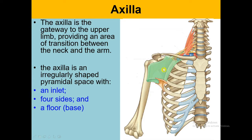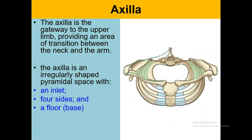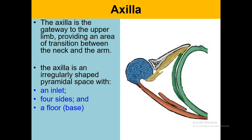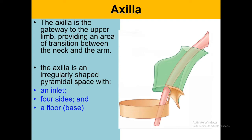The pyramidal space has an inlet, four-sided walls, and a floor or base. We can see here the superior view in which the green space is representing the axilla — this is the inlet of the axilla superiorly. Anteriorly we have the clavicle, posteriorly the scapula, and medially the first rib. Another view of the axilla shows the anterior wall, medial wall, posterior wall, and lateral wall. The axilla is a sheath in which all the axilla contents will be embedded.